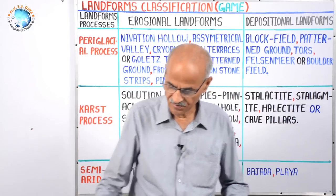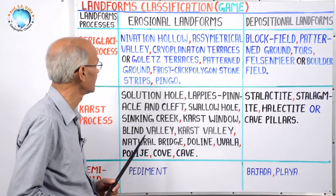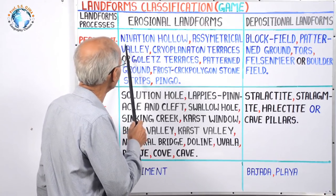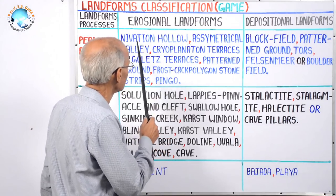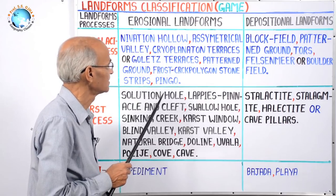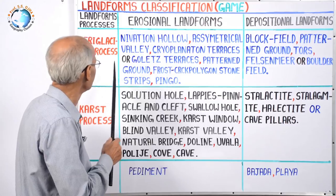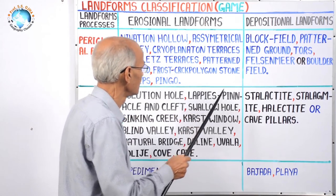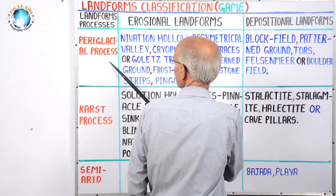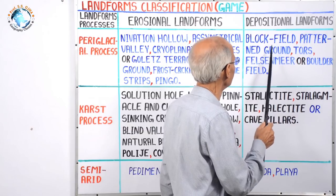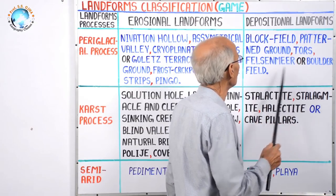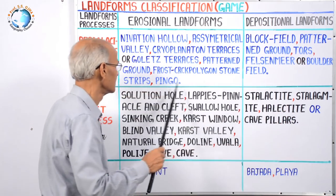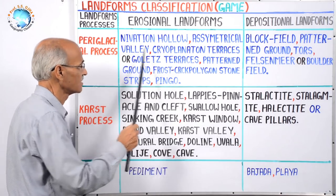Next is the periglacial region and process. The erosional landforms start from nivation hollow up to pingo, arranged in proper sequence. If the question asks for all erosional landforms in sequence by periglacial process, you take up this box. In another box, depositional landforms by the periglacial process are given in sequence, starting from block field to boulder field. If the question asks for all erosional and depositional landforms in sequence by periglacial process, you take both boxes.